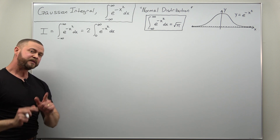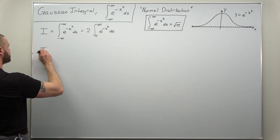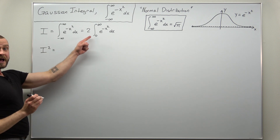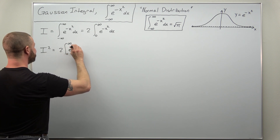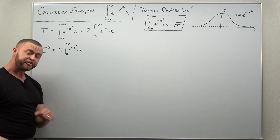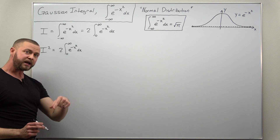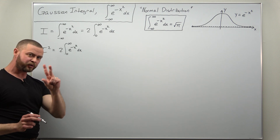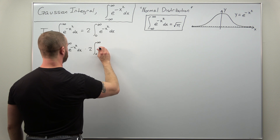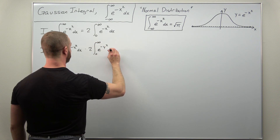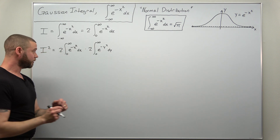Next, to get to a double integral, we're going to take our integral I and multiply it by itself to get I squared. We have I as two times the integral from zero to infinity of e to the negative x squared, integrated over x. We're going to multiply that by another copy of I, but changing the variable to y so we're not using x as the integration variable twice. So we get another integral: two times the integral from zero to infinity of e to the negative y squared, integrated over y.